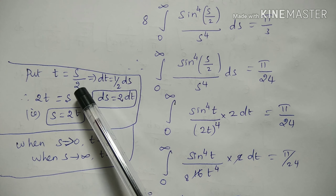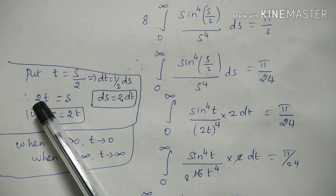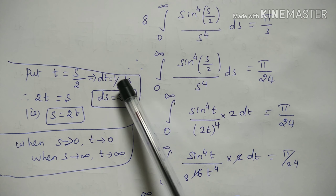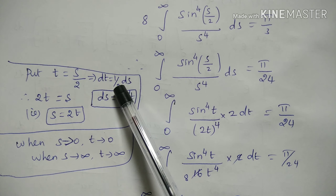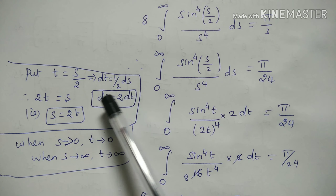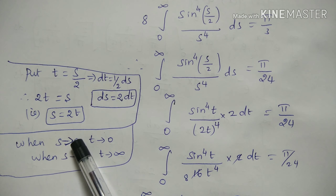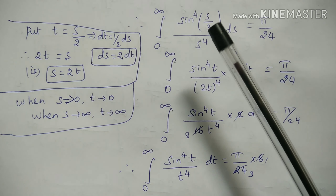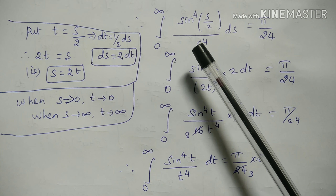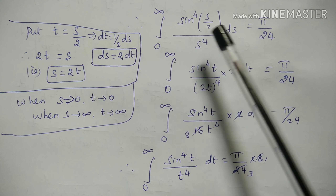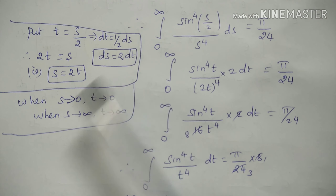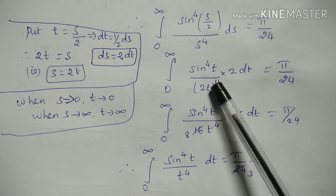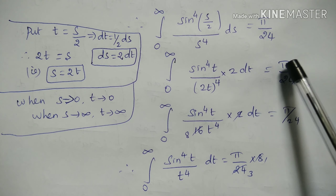We substitute 2t = s, so s = 2t and ds = 2dt. When s = 0, t = 0; when s = ∞, t = ∞. Substituting s/2 = t, s = 2t, ds = 2dt into the integral gives: integral from 0 to ∞ of sin⁴(t) / (2t)⁴ · 2dt = π/24. Expanding: 2/(16t⁴) · sin⁴(t) · 2dt, placing 8 in the denominator.